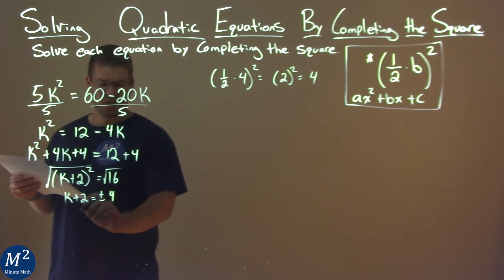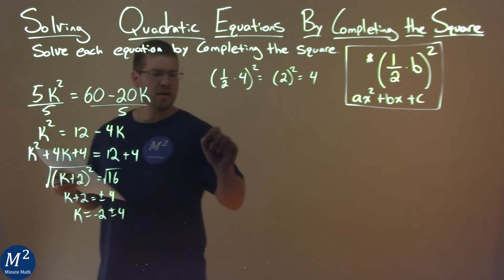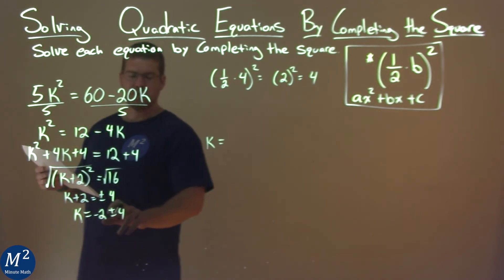Now, we just have to subtract 2 from both sides, and we have k equals negative 2 plus or minus 4, and let's go to now solve each one individually.